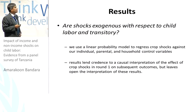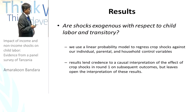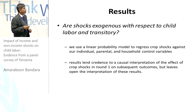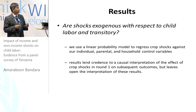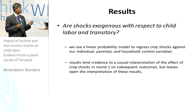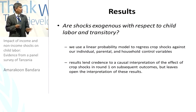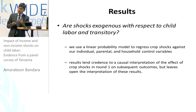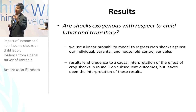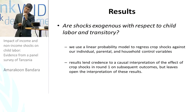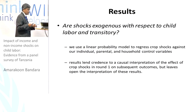On the question of whether shocks are exogenous with respect to child labor and whether they are transitory, we use a linear probability model to regress crop shocks against our individual, parental, and household control variables. The results generally lend credence to a causal interpretation of the effects of crop shocks in round one on subsequent outcomes. In one particular case, round-one shocks are somewhat related to round-two shocks, but the magnitude is very small, so we assume it is not a serious problem.